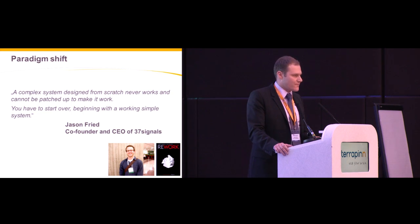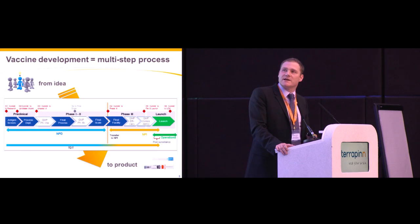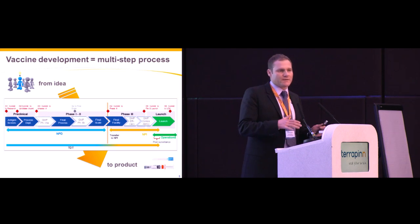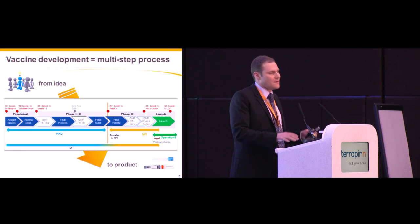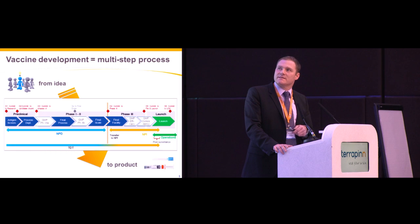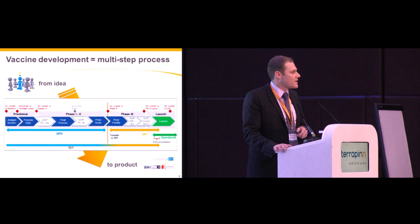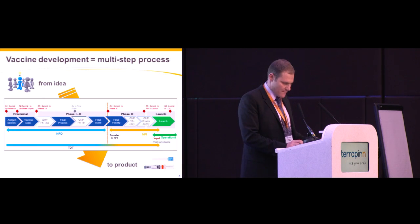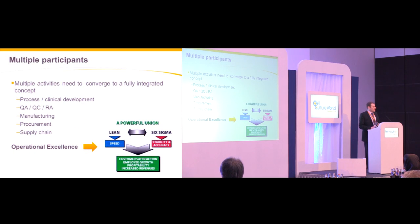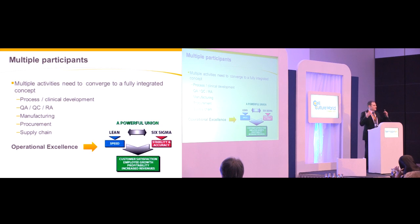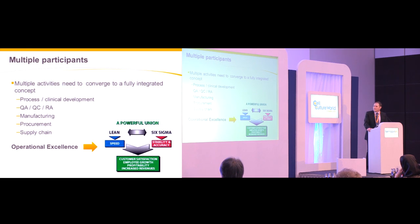Simplification is really one of the key questions. For vaccine development, it's a multi-step process from an initial discovery to a final product, and the whole development quality needs to be put in with the overall picture in mind. To be successful, the activities of multiple participants must converge to a fully integrated concept: process development, clinical development, quality assurance, quality control, regulatory affairs, operations, procurement, and supply chain of raw materials — all working together to assure consistent first-quality manufacturing. This connects to operational excellence.